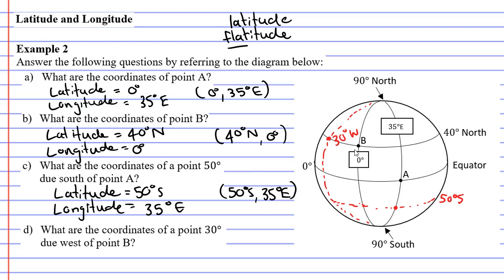Now you'll notice that your longitude stays the same. You still remain on your 40 degrees north, sorry, latitude. Your latitude is still 40 degrees north, but your longitude has changed.